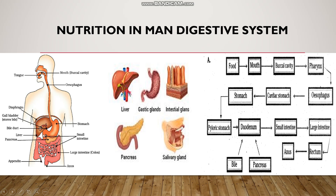The stomach then opens into the small intestine. The first part of the small intestine is the duodenum. The duodenum is C-shaped. The small intestine then opens into the large intestine. The large intestine then opens out through the rectum and to the anus.